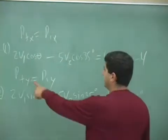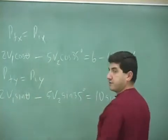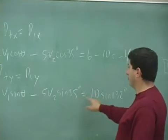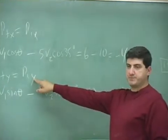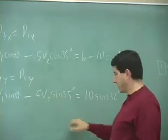And then how about the momentum final? Two V one sin theta minus five V two sin 35. Then what's the momentum initially in the y direction? Zero, right? So it makes this one zero.